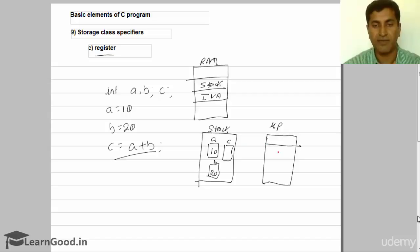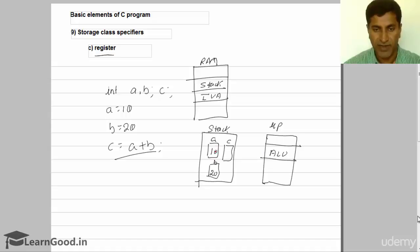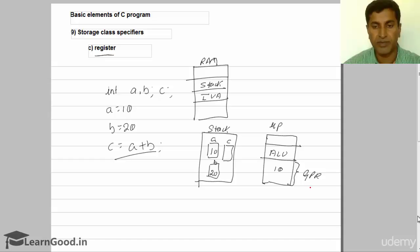Inside this microprocessor, you have a unit called the Arithmetic and Logic Unit (ALU). All arithmetical and logical operations take place inside this ALU unit. And inside the microprocessor, there is a small amount of memory we call GPR — General Purpose Registers. GPR stands for General Purpose Registers.